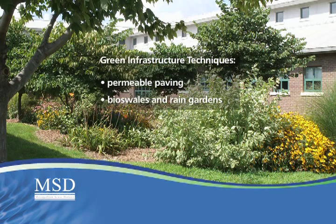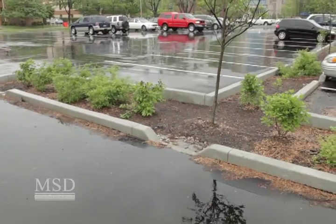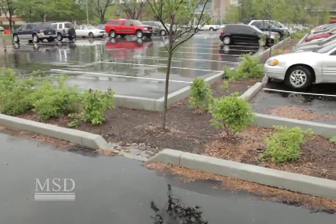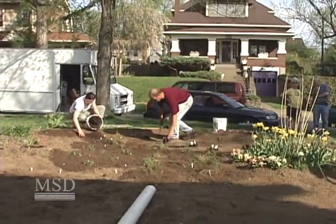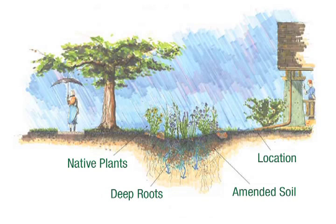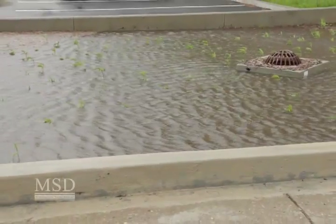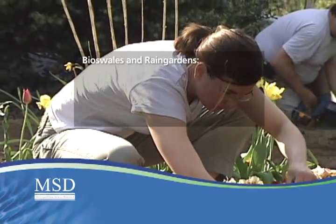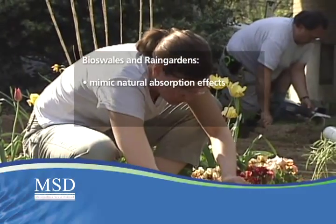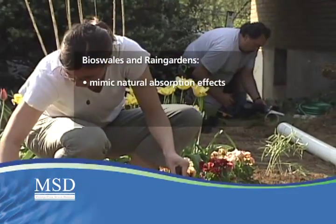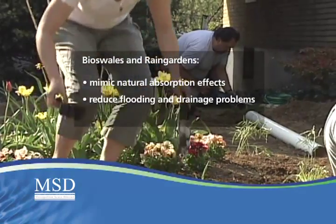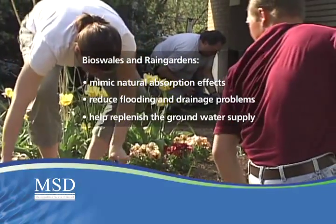Bioswales and rain gardens. Wide shallow swales, known as bioswales, and specially planted gardens, known as rain gardens, use amended soil and native plants to control stormwater flow and allow more time for infiltration into the soil. Bioswales and rain gardens mimic natural absorption effects, reduce flooding and drainage problems, and help replenish the groundwater supply.